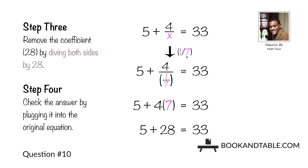Check this by plugging it back into the original equation. Dividing a term by a fraction means you multiply the numerator by the reciprocal of the denominator. Switching the 7 and the 1 gives us 7 over 1, and 4 times 7 is 28. On the left side of the equation, we wind up with 5 plus 28, which is equal to 33 — matching the value on the right side. So x is equal to 1/7 is the answer to question number ten.